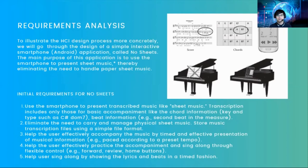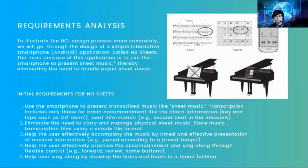The initial requirements for No-Sheets include: use the smartphone to present transcribed music like sheet music. Transcription includes only those for basic accompaniment — chord information, key and types such as C-sharp or Dominant 7, beat information, and example sound beats in the measures. Other requirements include: eliminate the need to carry and manage physical sheet music by storing music transcription files using a simple file format; help the user effectively accompany the music through timely and effective presentation of musical information; help the user practice accompaniment through flexible control; and help the user sing along using lyrics and beats in a timed fashion.